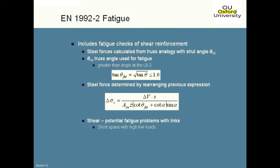We haven't done enough calibration exercise on this, but what it does show is that if you go for flat truss angles and you have short spans — so basically the live load is a very high percentage of the total shear load — then you could run into problems with fatigue in the shear links. Whether that's real or not I'm not sure, because I don't think there's been enough research, but that's what the code will tell you. If you've got longer span structures which are dead load dominated, then it generally won't be an issue.